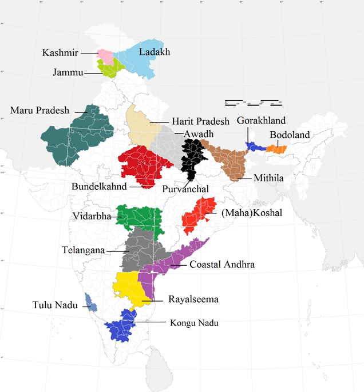However, in 2008, a new party called the Gorka Janmukti Morcha raised the demand for a separate state of Gorkaland once again. In 2011, GJM signed an agreement with the state and central governments for the formation of Gorkaland Territorial Administration, a semi-autonomous body that replaced the DGHC in the Darjeeling Hills.